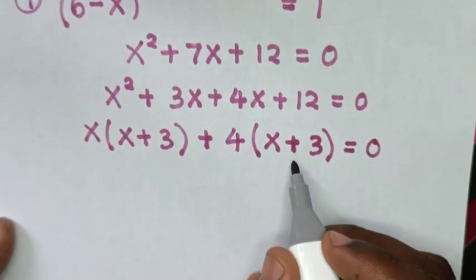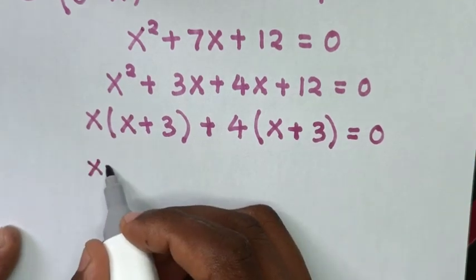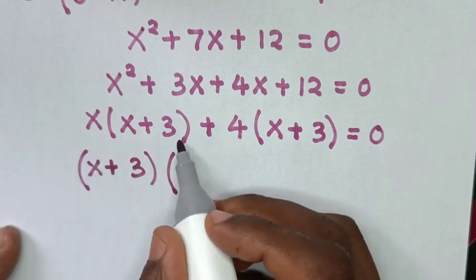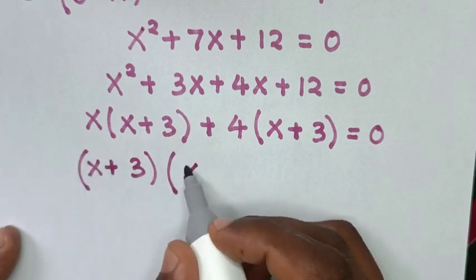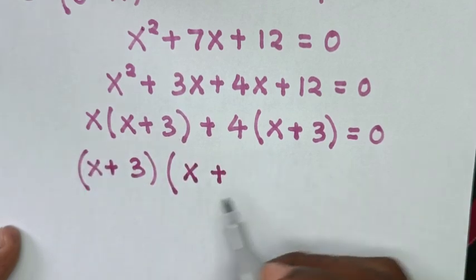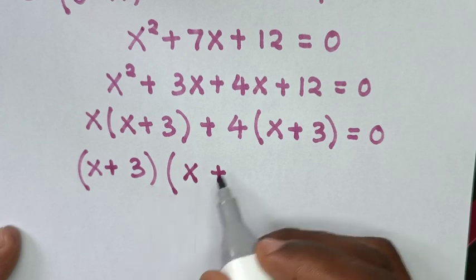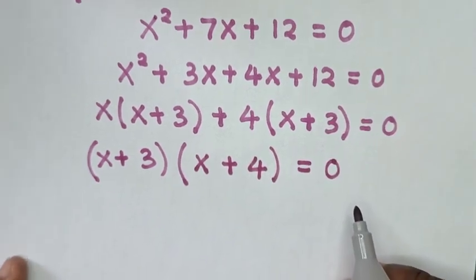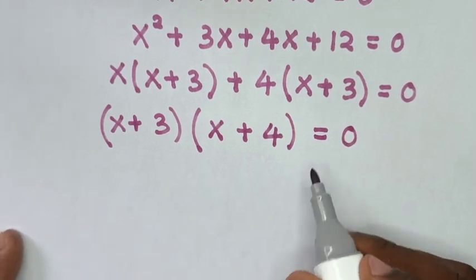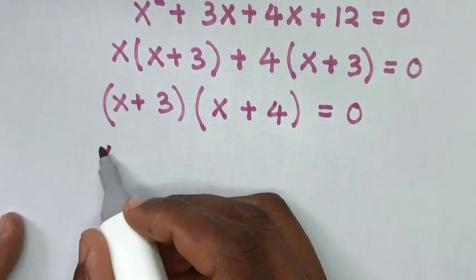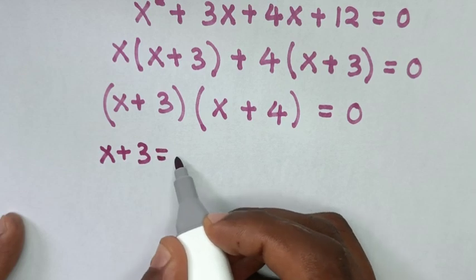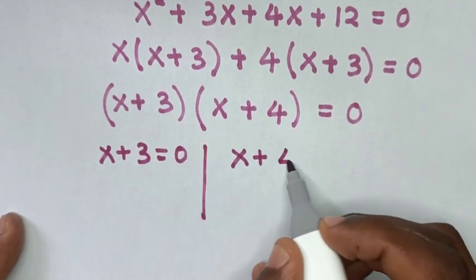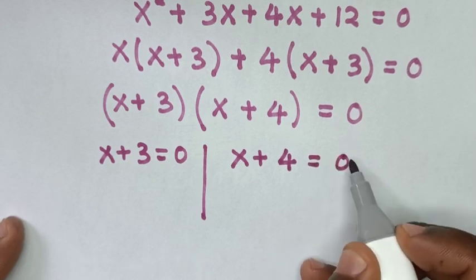From here, (x plus 3) is common, so take (x plus 3) out of the bracket. Then it becomes (x plus 3)(x plus 4) is equal to 0. From here we have two solutions: the first solution is x plus 3 equals 0, and the second solution is x plus 4 equals 0.